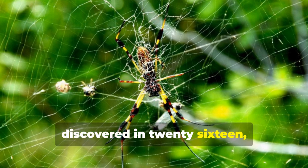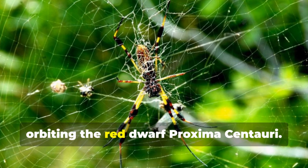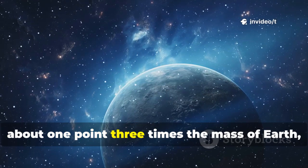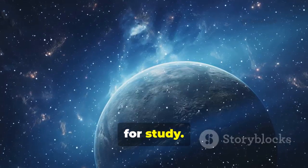Proxima b, discovered in 2016, is our closest known exoplanetary neighbor, orbiting the red dwarf Proxima Centauri. It's a rocky planet about 1.3 times the mass of Earth, and its proximity makes it a prime target for study.